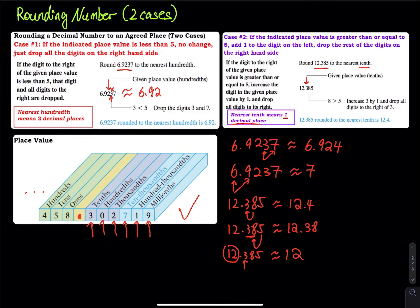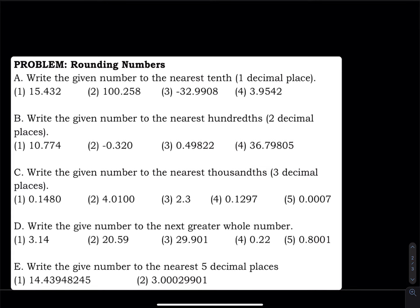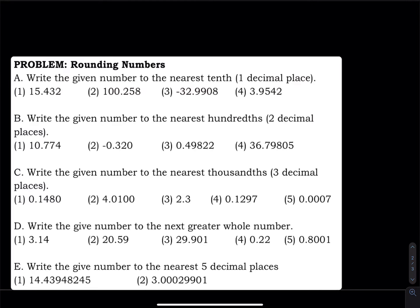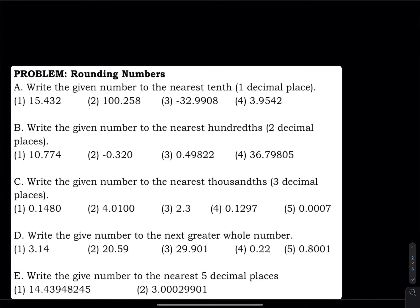Let's do more exercises. Part A asks you to write the given numbers to the nearest tenth, which means one decimal place — the first digit on the right hand side of the decimal point. For the first number, the next digit is 3, which is less than 5, so we don't add one. The second number's next digit is 5, so we add one to the 2, giving 3. The third number has 9 as the next digit.